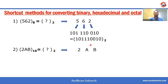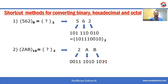For hexadecimal to binary, we write each hexadecimal digit into binary using four bits. So 2 is 0010, A is 1010, B is 1011. That's how we get the final binary number. Thank you for watching this video.